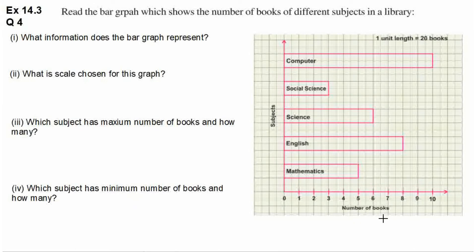Here the horizontal line represents number of books. Vertical line represents different subjects. And in this bar graph, one unit length represents 20 books.